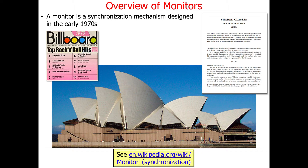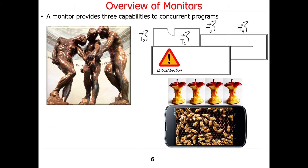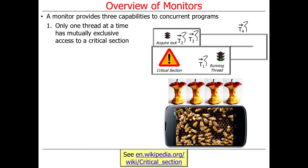It came out in the early 70s — around 1973. The monitor provides three primary capabilities to concurrent programs. The first capability is it only allows one thread at a time to have access to a critical section, so it's mutually exclusive. Only one thread can do it at a time; other threads end up having to wait if they want to get access to that critical section. They're forced to wait outside.